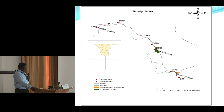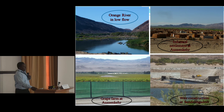We had our study area with a number of sampling points all along the river. From the map you can see land use including settlement, the river itself, roads, locations where settlements are, and most importantly the irrigated area where agricultural activities take place. These images portray different views of the Orange River in Namibia.